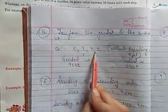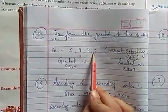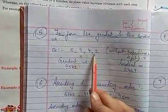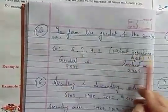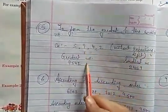Here I have written different digits and we have to write the greatest number and smallest number from these digits without repeating a digit. So how we will write?